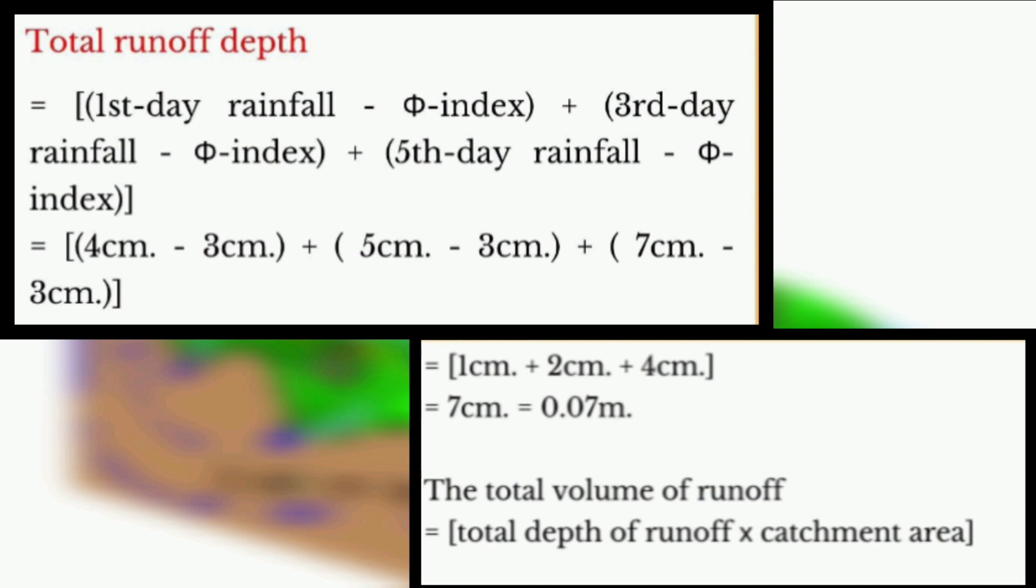Total runoff depth equals first day rainfall minus phi-index, plus third day rainfall minus phi-index, plus fifth day rainfall minus phi-index. After calculating this, we get the total runoff depth equals 0.07 meters. The total volume of runoff equals total depth of runoff times catchment area.